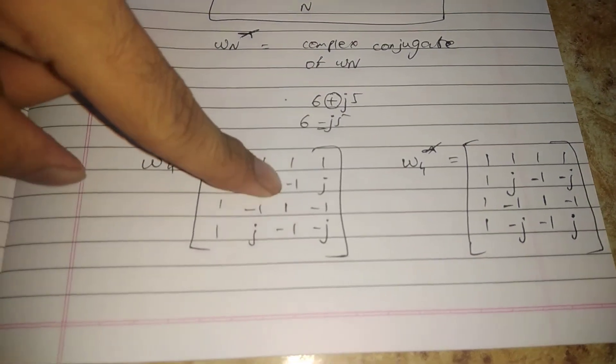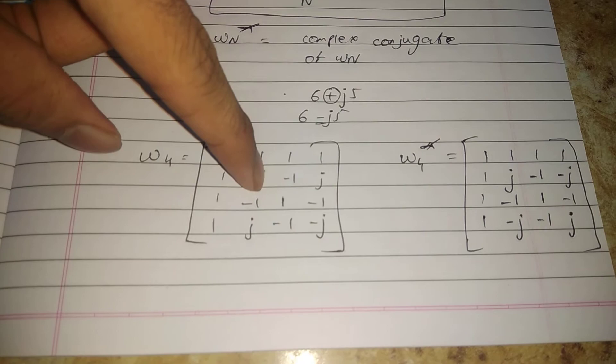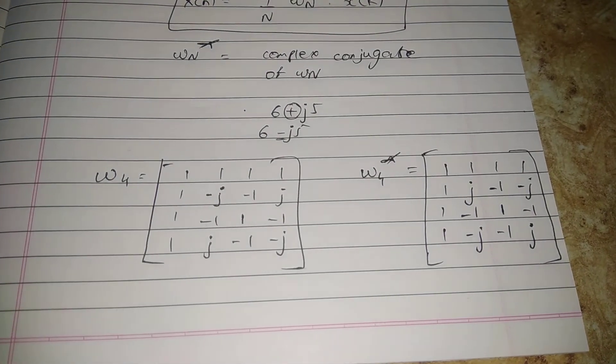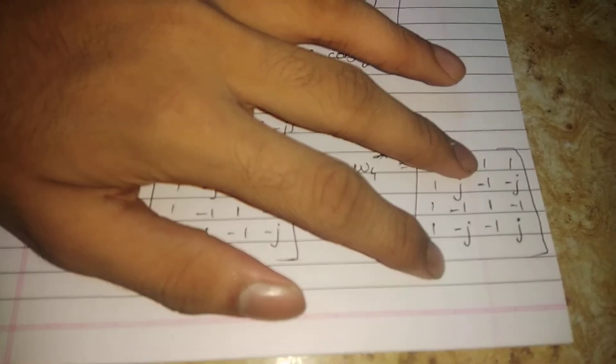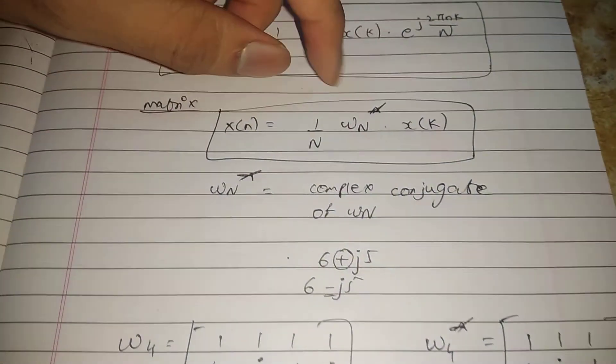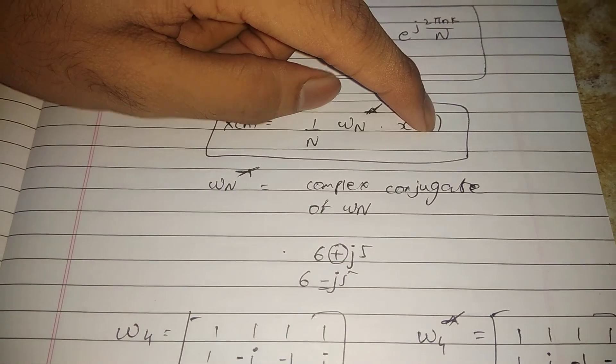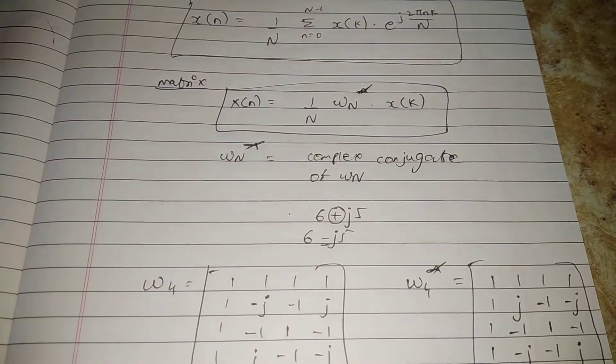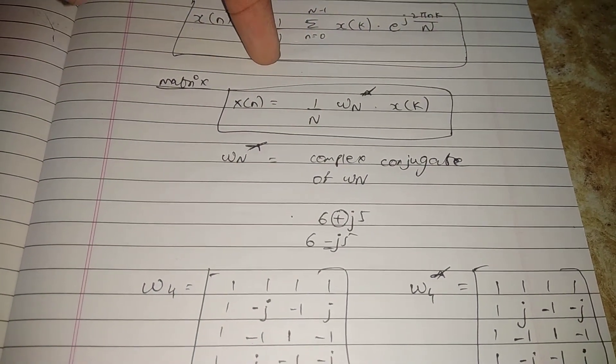This matrix is used to calculate the inverse discrete Fourier transform. If you use this matrix and multiply it with x(k), and apply the 1 by N factor where N is the number of sequences, then you have your matrix method ready.